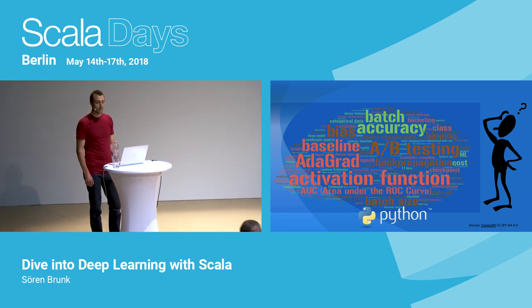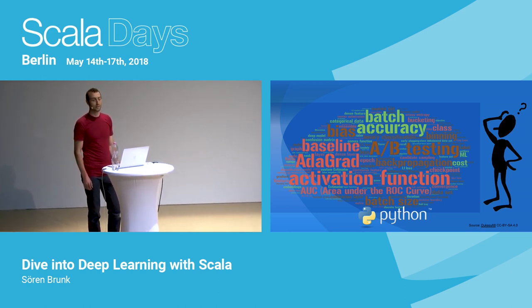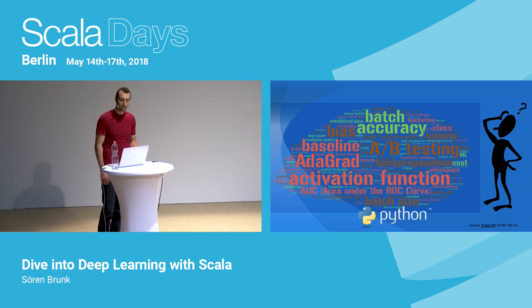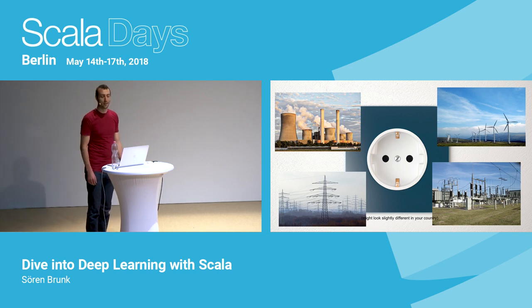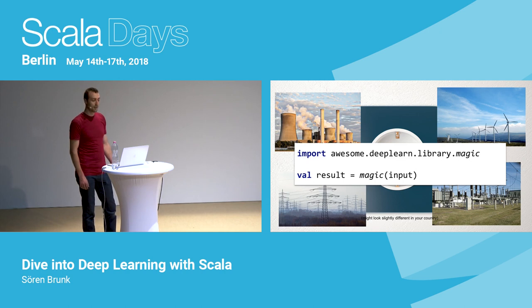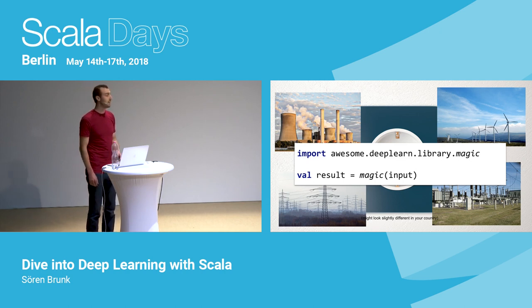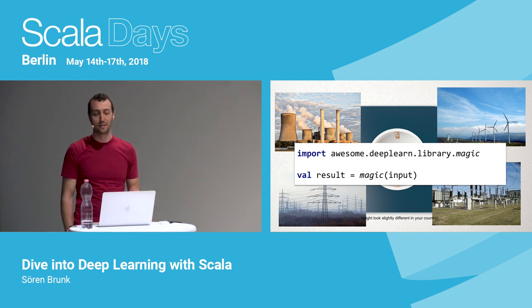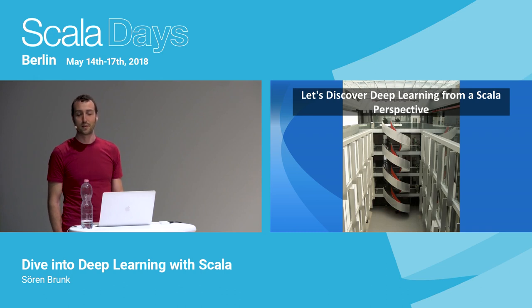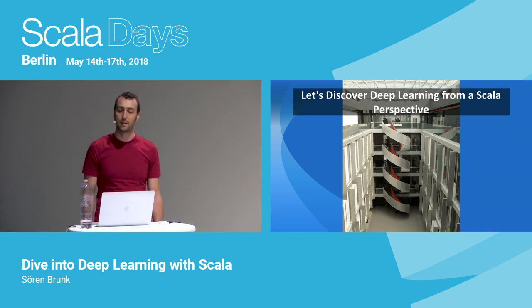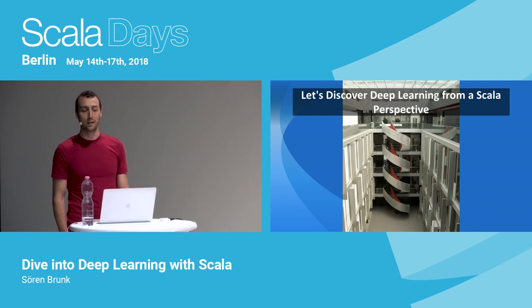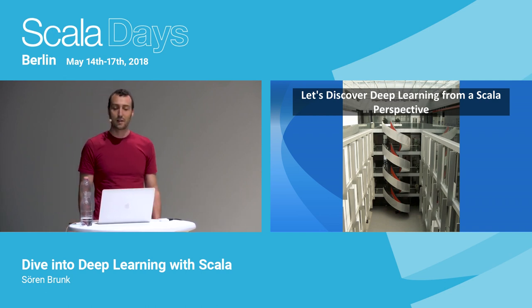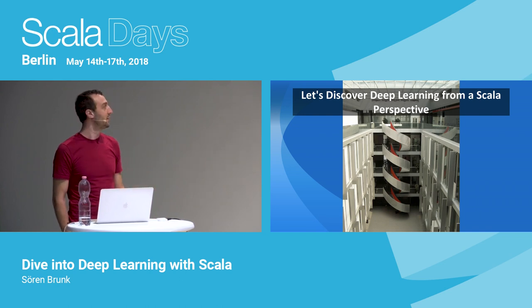You might be wondering what's a good way to get started, and whether you need a PhD in statistics or machine learning. What you're hoping for is a nice abstraction that allows you to use the technology without having to know all the details — a library that hides those details behind a nice interface. The good news is you don't have to learn all the theory to get started. For many tasks, it's enough to know the basics, and you can learn more along the way. It's totally possible to do deep learning with Scala.